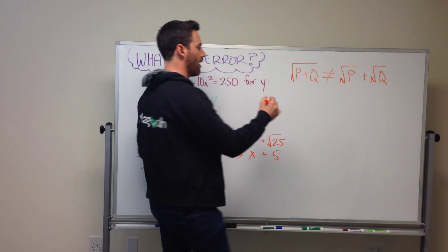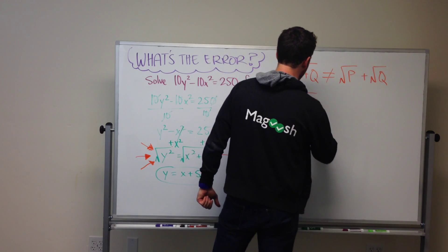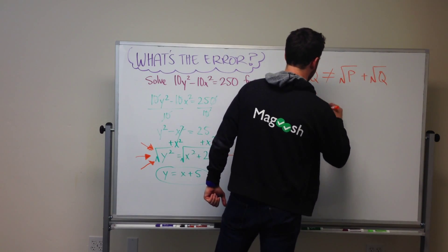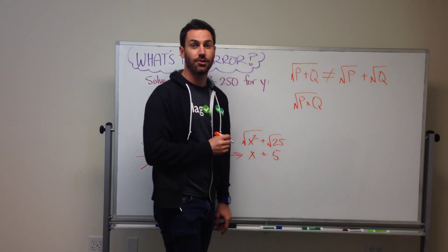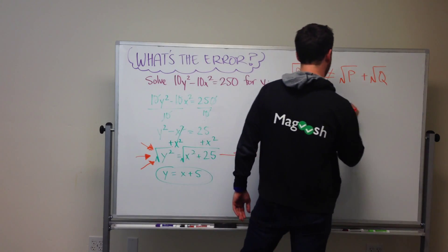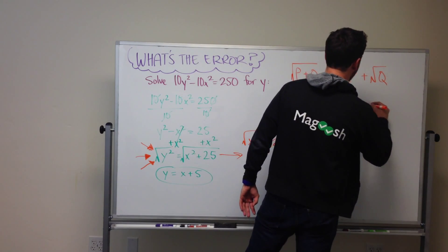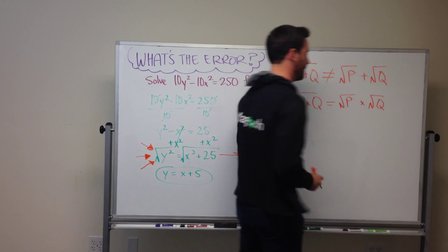It does work, however, if you have p times q and put that under a square root. Then you can take the square root of each item that is there.